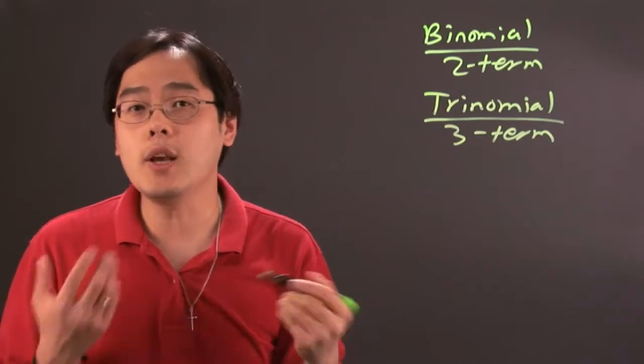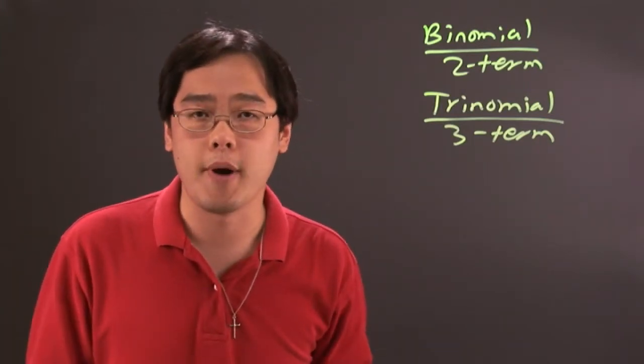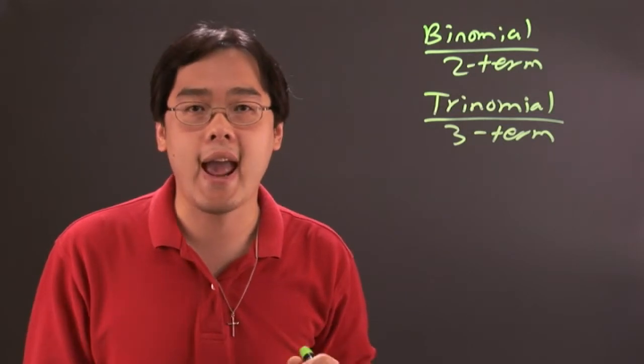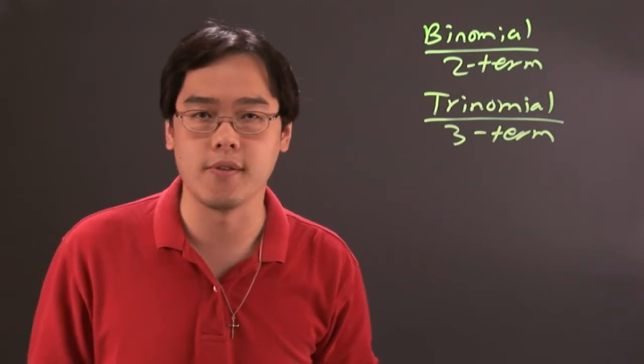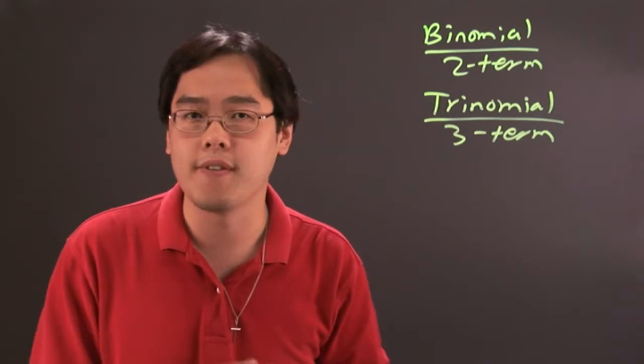Now, here's the thing though. The key word is polynomial because part of the characteristics of a polynomial is you cannot have fractions in the exponents of the variables. So, you cannot have x to the two-thirds or y to the one-fifth, things like that.